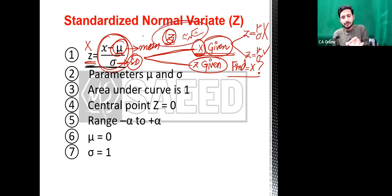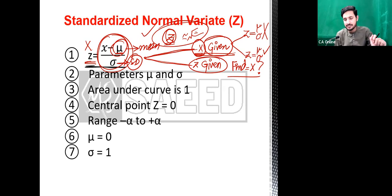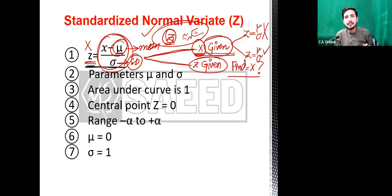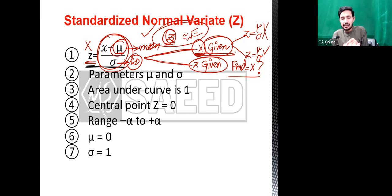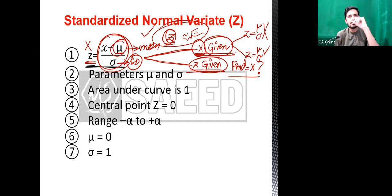اگر given ہے تو table میں جا کے دیکھیں، probability آ جائے گی۔ لیکن اگر given نہیں ہے تو پھر z کی value نکالنے کے لیے x کی value formula میں put کریں گے۔ مسئلہ یہ بھی ہے کہ کیا standard deviation given ہوگا، variance given ہوگا، یا mean given ہوگا۔ اگر given ہوگا تو ہم کر لیں گے، اگر نہیں ہوگا تو بھی z نکال لیں گے۔ Question میں z کی value بھی directly given ہو سکتی ہے۔